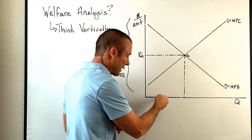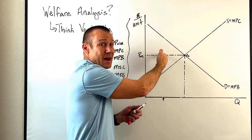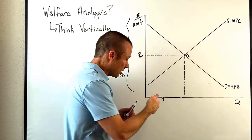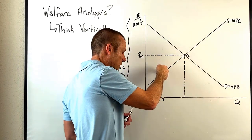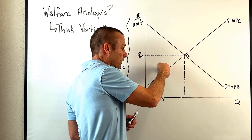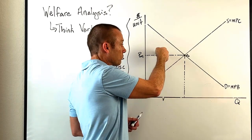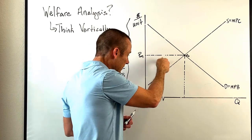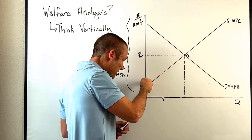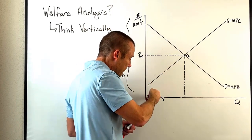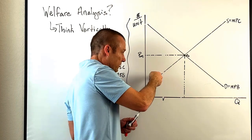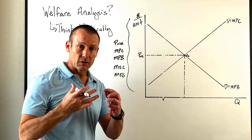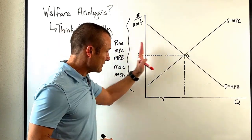For producer surplus: price is the per-unit benefit to the producer, and the curve is the marginal private cost. So the vertical distance between the price and the MPC for that unit is the surplus or profit. All those verticals between the vertically-measured benefit and the vertically-measured cost give us the producer surplus triangle.